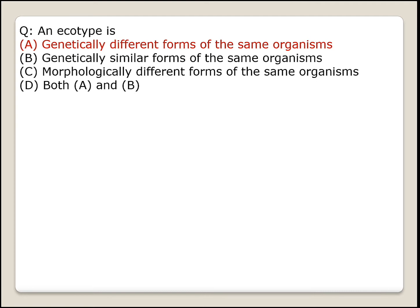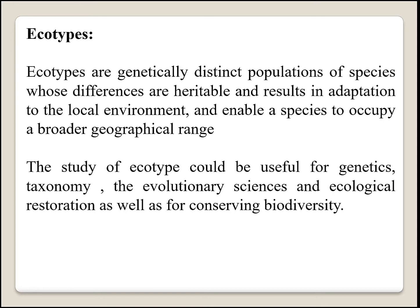Next question: an ecotype is genetically different forms of the same organisms. Option A is the right answer. Ecotypes are genetically distinct populations of a species whose differences are heritable and result in adaptation to the local environment, enabling a species to occupy a broader geographical range.